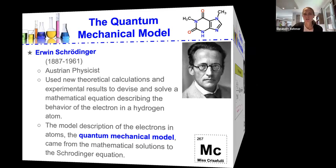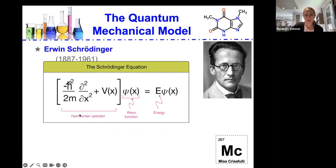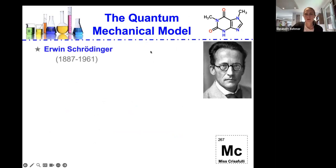So here's the Schrödinger equation, very kind of complex. We have the Hamiltonian operator multiplied by the wave function will lead to energy.